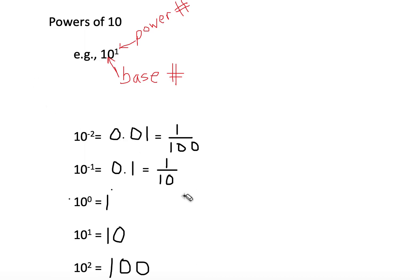Notice our scaling: from 10 to the minus 2 to 10 to the 2, the size drastically increases. 10 to the minus 2 is 1 divided by 100. 10 to the minus 1 is 1 divided by 10, which is 10 times larger. 10 to the 0 is 1, which is 10 times larger than that. 10 to the 1 is 10, and 10 to the 2 is 100 — each step being 10 times larger. This is an important relation to remember when thinking about the powers of 10.